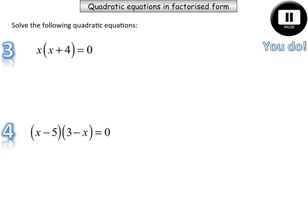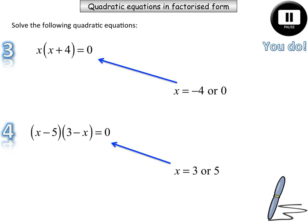Okay, here are the last two questions. So pause the video and solve these two quadratic equations and verify your answers in a moment. Okay, so the first one, x is equal to zero and negative four. And this one here, five will make this equal to zero and three would make that equal to zero. So here are our solutions.